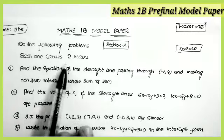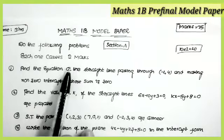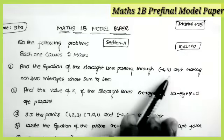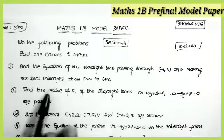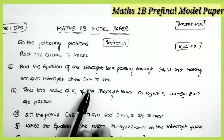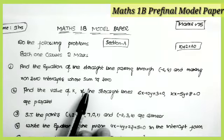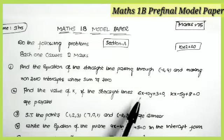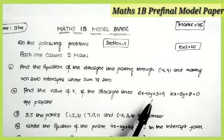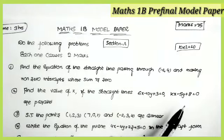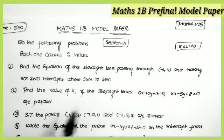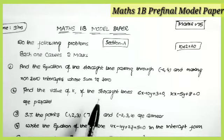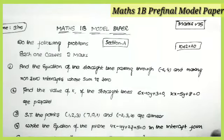Section A: Do the following problems. Each one carries two marks. The first question: find the equation of the straight line passing through the point (−2, 4) and making non-zero intercepts whose sum is equal to 0. The second question: find the value of k if the straight lines 6x − 10y + 3 = 0 and kx − 5y + 8 = 0 are parallel. Both questions are from the topic Straight Lines.